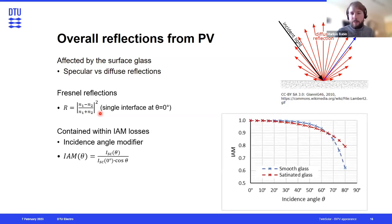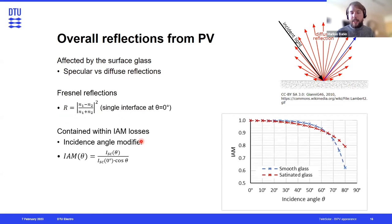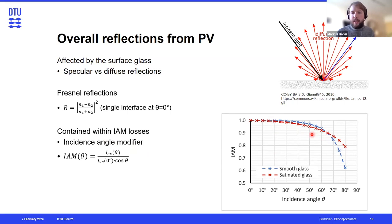If we go to a material with a higher refractive index, we might see higher reflections. Additionally, this actually increases with incidence angle — this equation holds true for normal incidence, but if the light comes in at an angle, the reflections increase. That can be described with the so-called incidence angle modifier (IAM) in PV, which is just an experimental measure of these increased reflections. We measure it by measuring the short-circuit current at a certain incidence angle and comparing it to the short-circuit current at normal incidence.